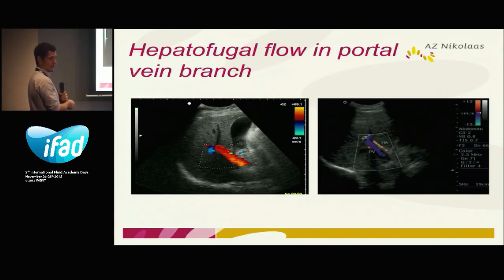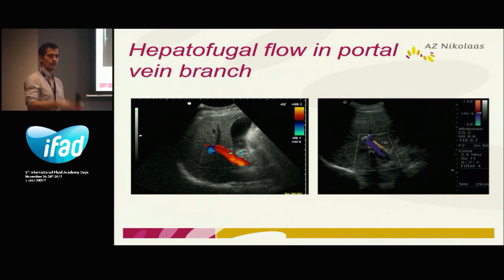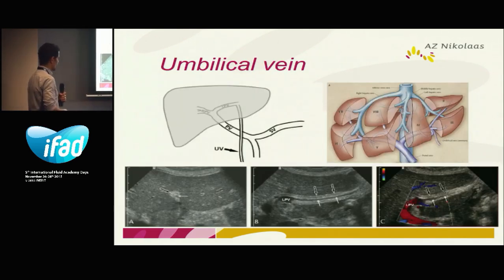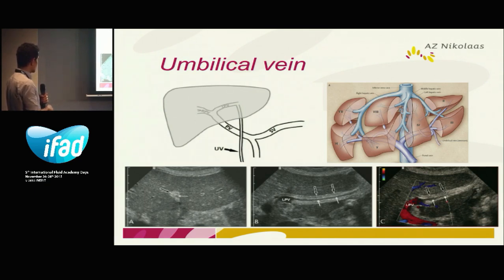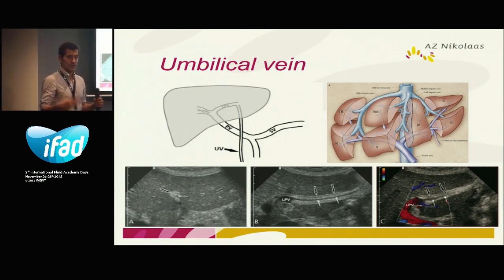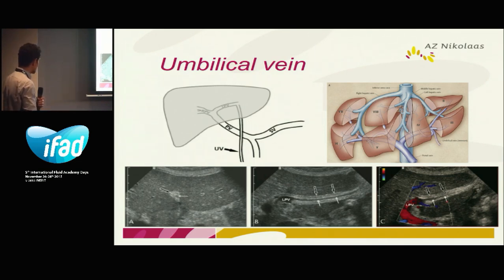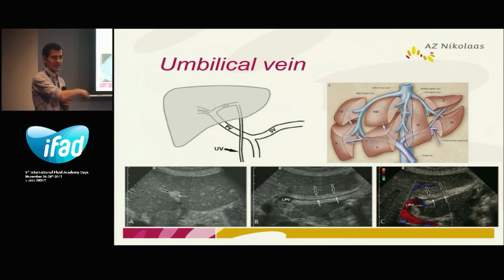Normally the flow goes to your liver, but in severe liver disease the flow goes away from your liver — hepatofugal, meaning the flow goes away. If cirrhosis is very severe, you can appreciate repermeabilization of the umbilical vein, which leaves from the left portal vein. Normally after birth it disappears, but in portal hypertension it can reappear. Here we see the ligamentum teres with repermeabilization of the umbilical vein as a sign of portal hypertension.